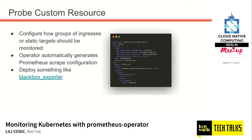One of our newer custom resources is the Probe custom resource. As the name suggests, it lets you configure how groups of static targets or ingresses should be monitored. You do need to deploy something like the blackbox exporter for it to work, and it's one of our newest additions — really powerful.